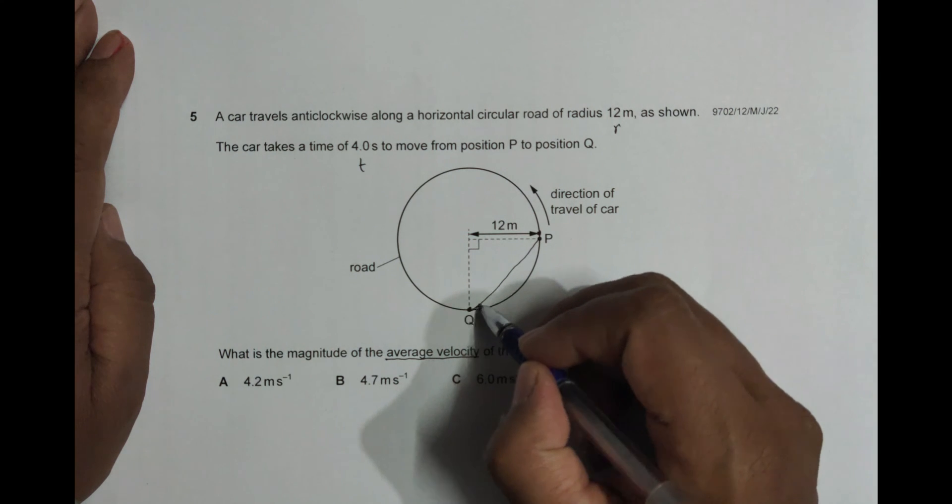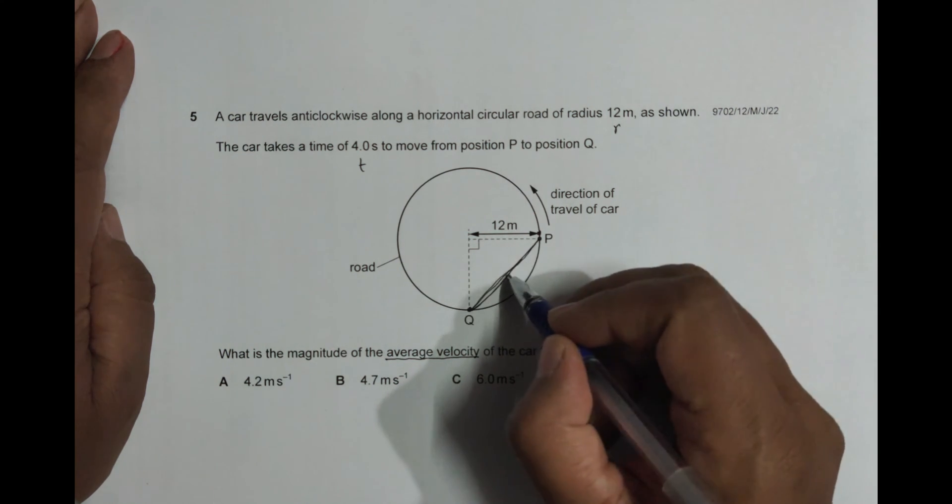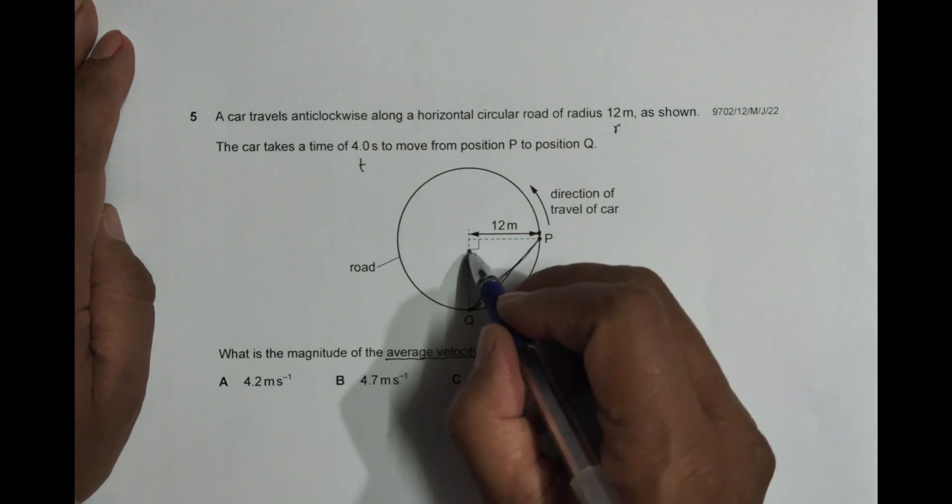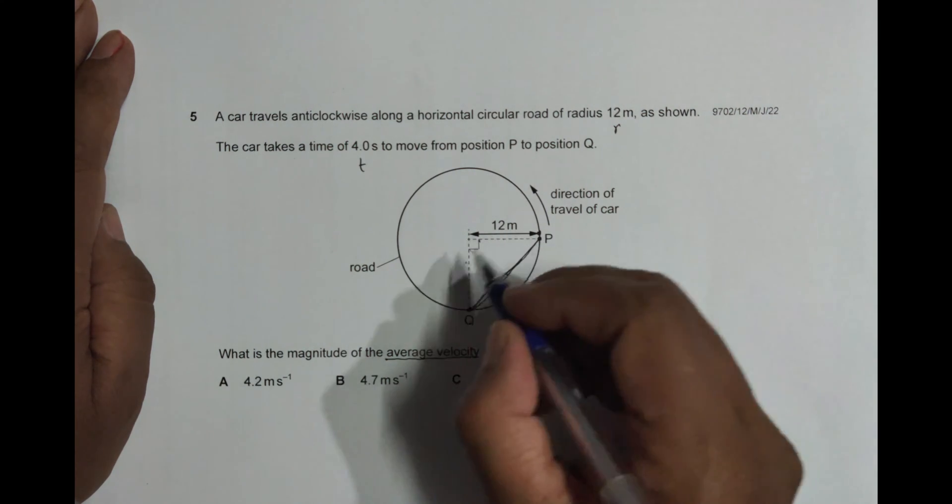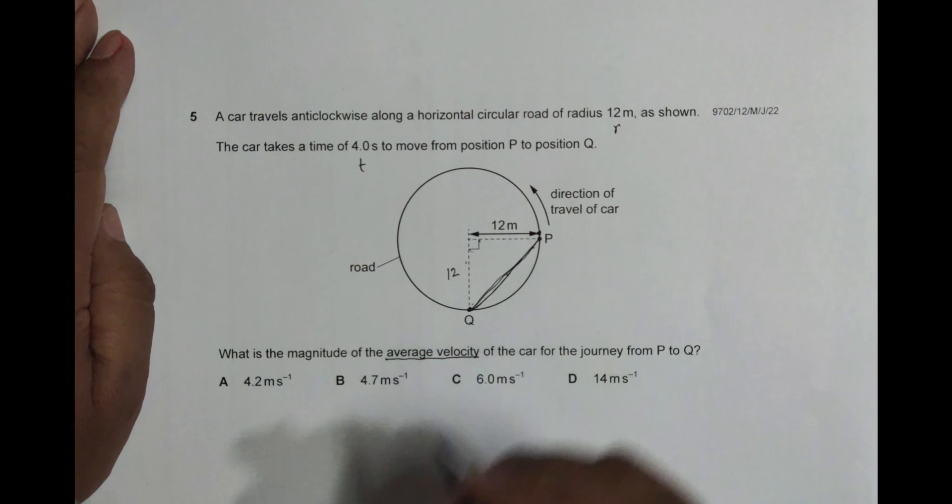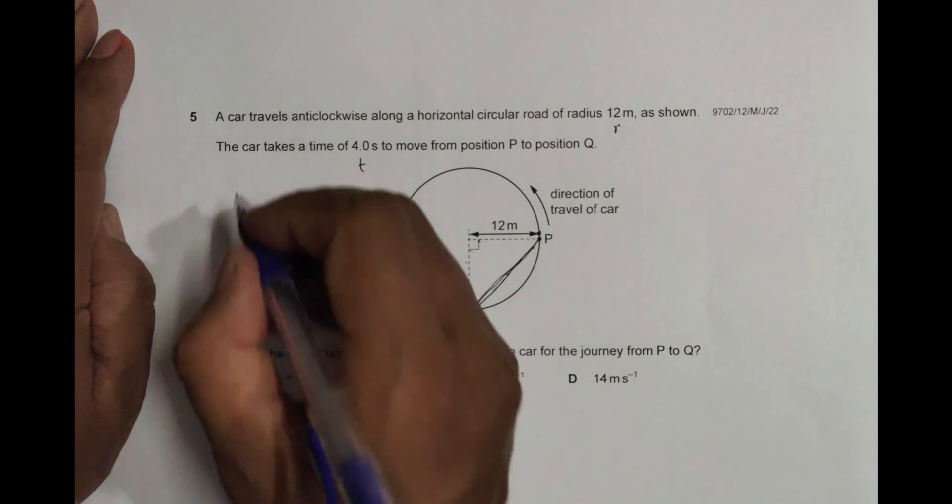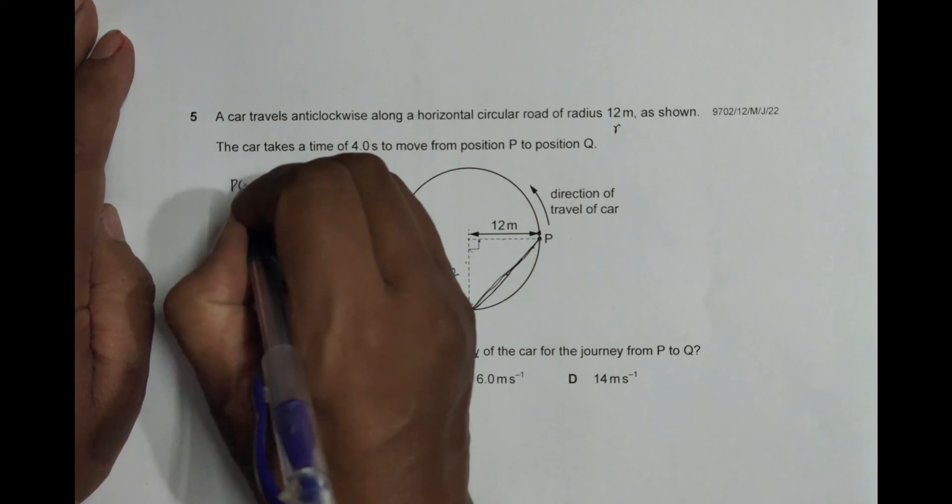This is the displacement. It's like one side of this triangle. This is 90 degrees, so if radius is 12, this is also 12. We have to find this PQ. This PQ will be equal to, since it's a right angle triangle, it should be equal to 12 square plus 12 square whole root.